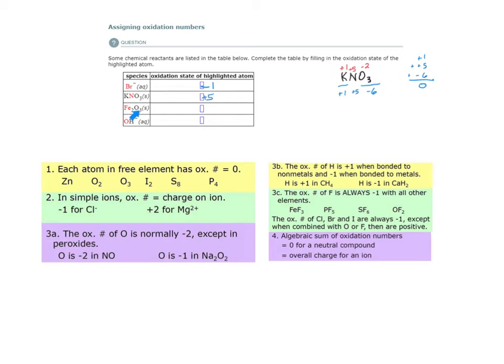Here we have iron(III) oxide. From the Stock system, the Roman numeral three tells us the oxidation state of the iron atom is plus three. But doing it the long way with the chemical formula Fe₂O₃: working backwards from oxygen, each oxygen atom has an oxidation number of minus two, for negative six total. With two iron atoms, they must total plus six so that the algebraic sum of oxidation numbers is zero. So each iron cation has an oxidation number of plus three.